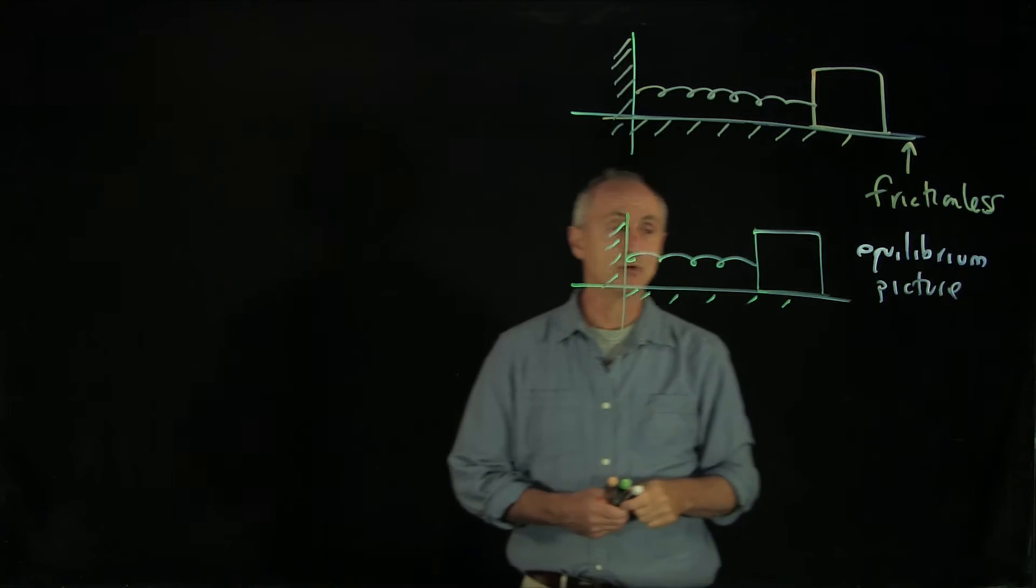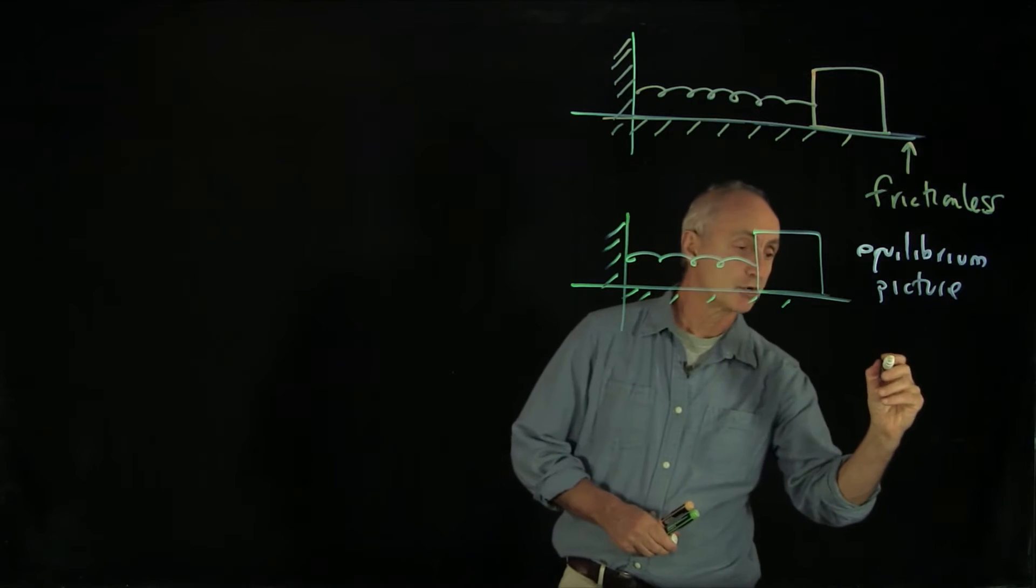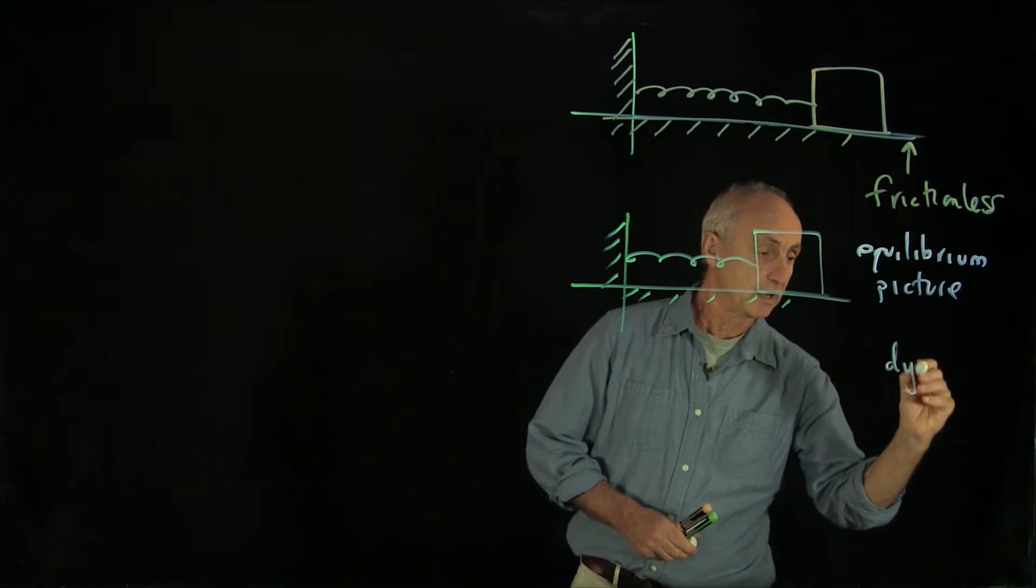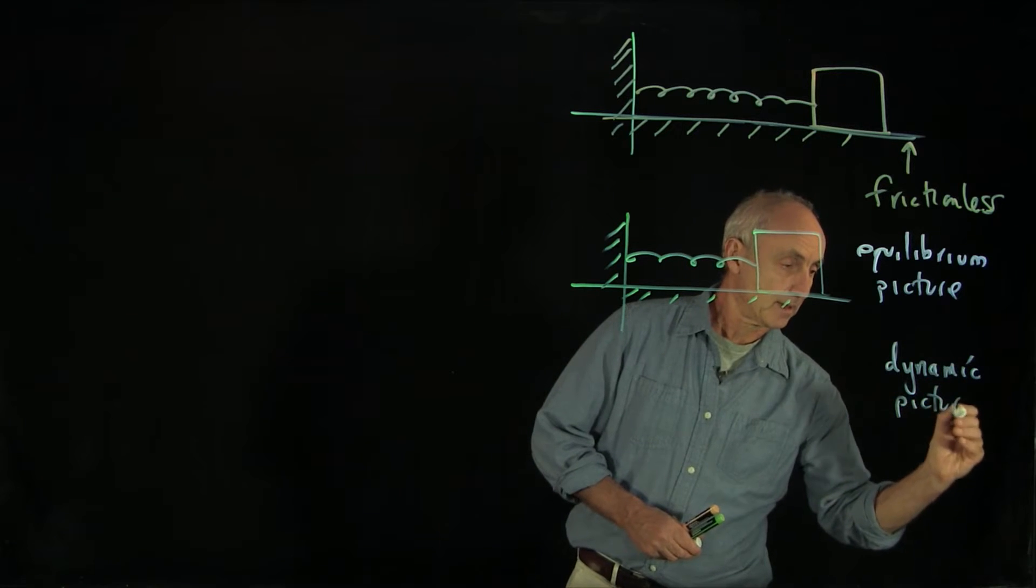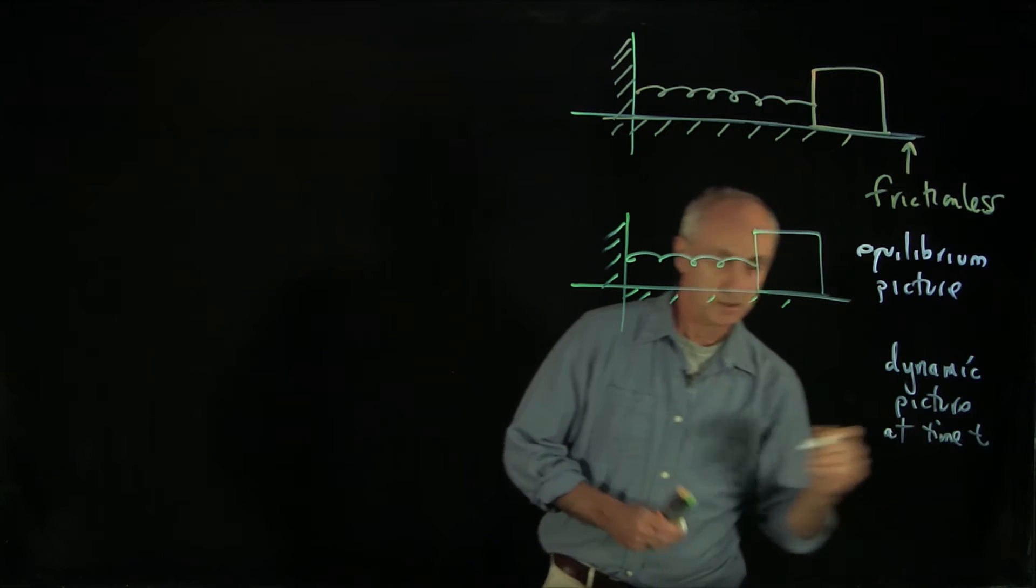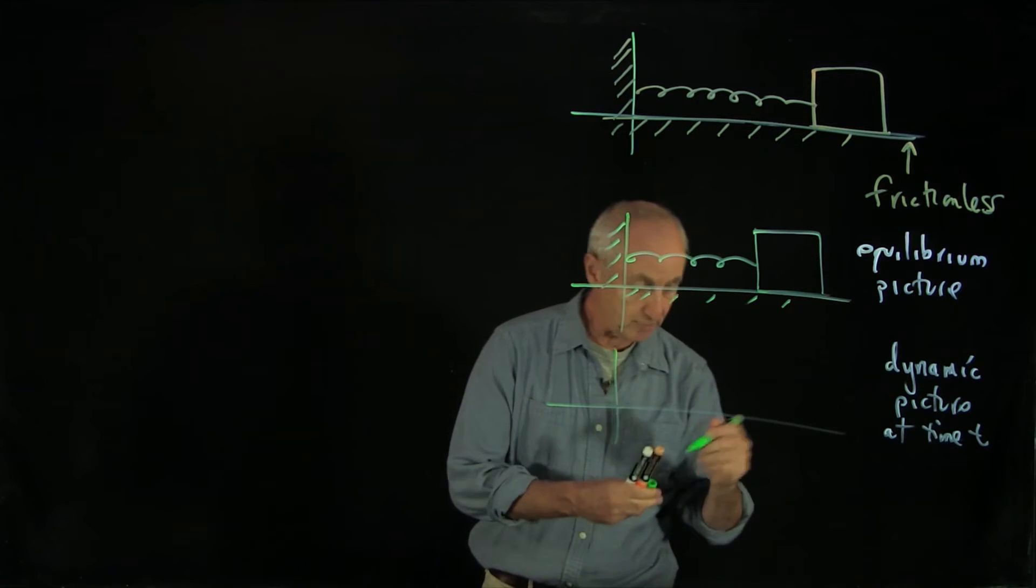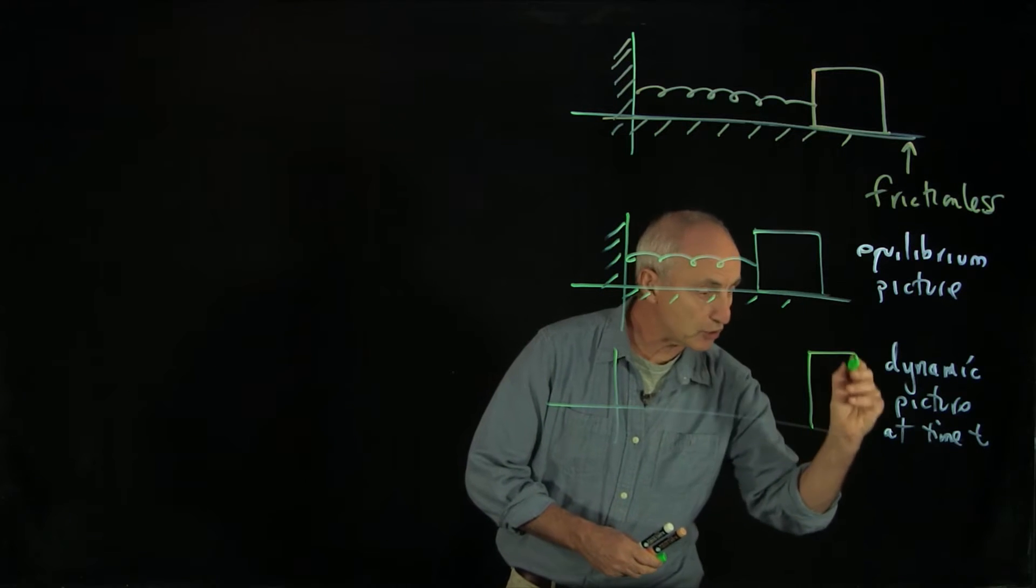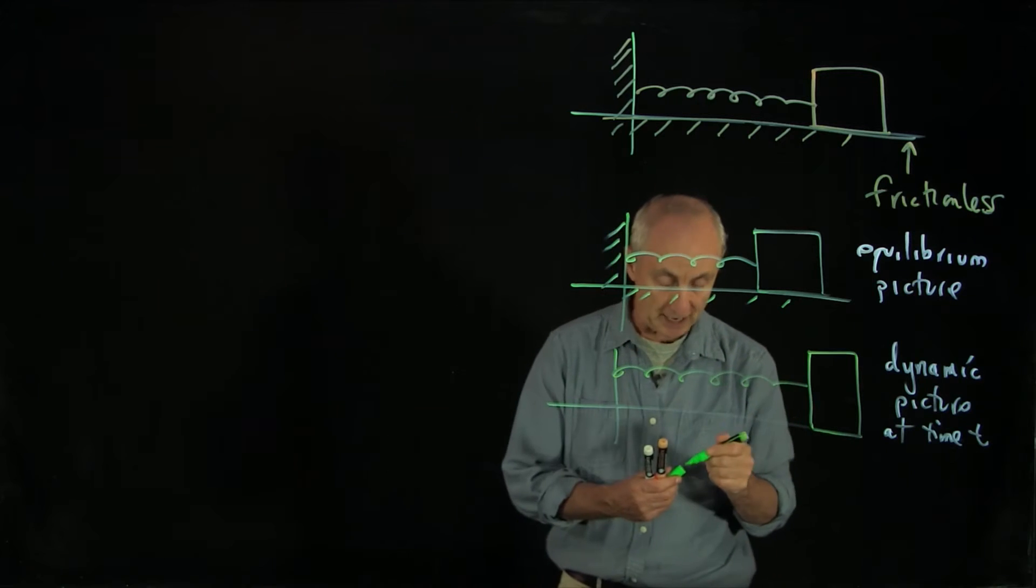Now what we'd like to do is draw a picture, a dynamic picture, at some arbitrary time t. So here we have a dynamic picture at time t. We draw the same object, and now we're going to move our object to some arbitrary position. In this case, the spring has been stretched.